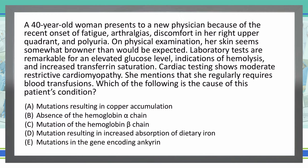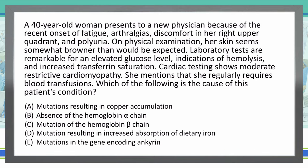Let's go through these answer choices and see which ones would fit our clinical vignette and which ones would not. Option A: mutations resulting in copper accumulation. We know that copper accumulation can cause some browning of the skin — this is Wilson's disease. But we also note that they typically will have Kayser-Fleischer rings, a golden brown ring visible around the iris. There's no mention of that in this vignette. Other symptoms associated with Wilson's disease include Parkinson's symptoms, asterixis, and dementia — not seeing any mental deficiency in this patient. So I'm ruling out A.